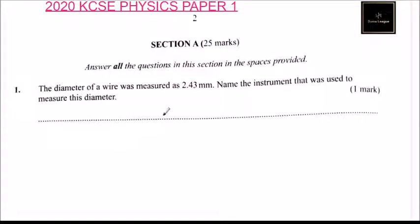This is the 2020 KCSE Physics Paper 1, Section A, which is 25 marks. Answer all the questions in this section in the spaces provided. The diameter of a wire was measured as 2.43 millimeters. Name the instrument that was used to measure the diameter.